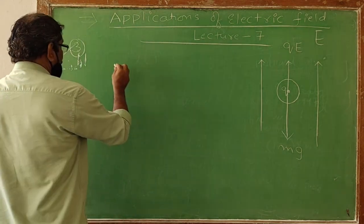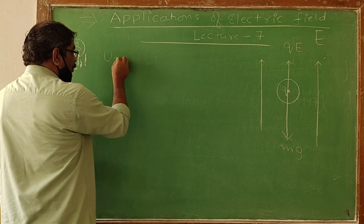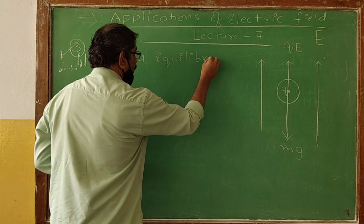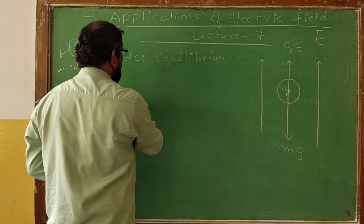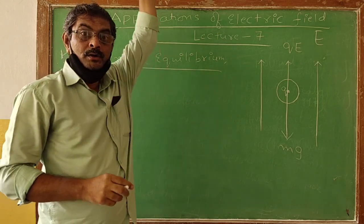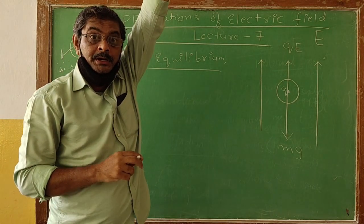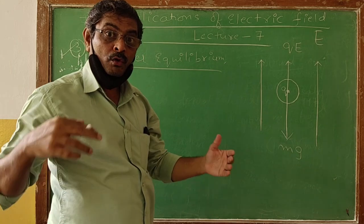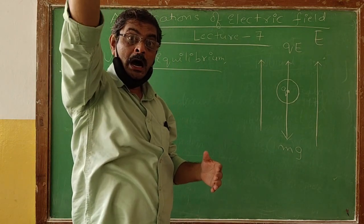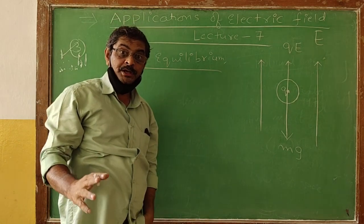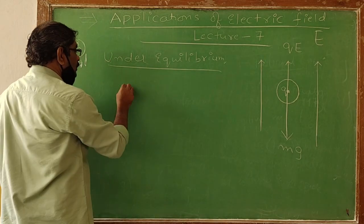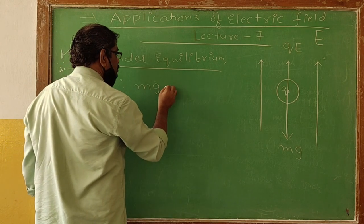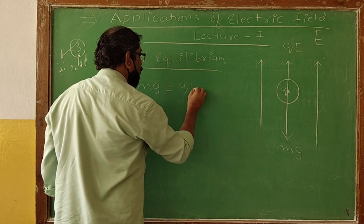From the free body diagram, two forces act on the oil drop: weight mg acting vertically downward, and electrostatic force QE acting vertically upward. Under equilibrium, the upward force balances the downward force — that is, the upward force equals the downward force. So for equilibrium: Mg = QE. This is equation number 1.